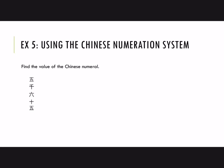And one more. We have the symbol for 5, and then 1000, and then 6, and 10, and finally 5. So in groups, we have 5,000 and then 65.